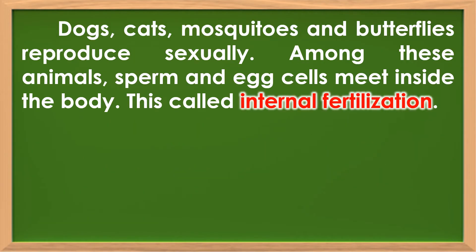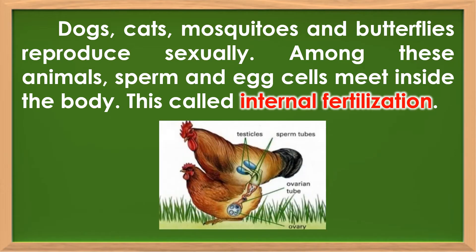Dogs, cats, mosquitoes, and butterflies reproduce sexually. Among these animals, sperm and egg cells meet inside the body. This is called internal fertilization. This is the picture of how internal fertilization occurs.